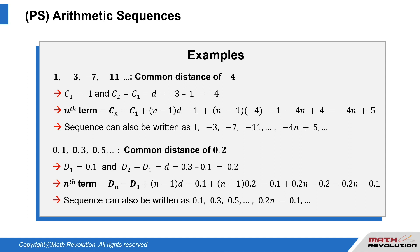0.1, 0.3, 0.5, and so on. This arithmetic sequence has a common distance of 0.2, since d(1) equals 0.1, and d(2) minus d(1) equals 0.3 minus 0.1 equals 0.2. The nth term equals d(n) equals 0.1 plus (n−1) times 0.2 equals 0.1 plus 0.2n minus 0.2 equals 0.2n minus 0.1. So the sequence can also be written as 0.1, 0.3, 0.5, until 0.2n minus 0.1, and so on.